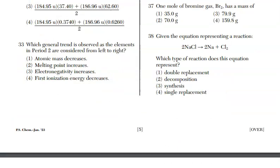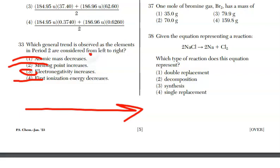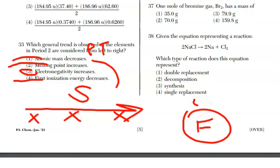Question 33, which general trend is observed as the elements in period 2 are considered from left to right? We're going across the periodic table. Does the atomic mass decrease? That is for sure a no. The electronegativity, does that increase? That is a yes. You could go to reference table S, and what you could do is you could spot three elements in period 2, which is row 2, and then look at the general trend. I know in period 2, we have fluorine at the very end, and fluorine has the highest electronegativity at 4.0. So that definitely means, as we're going towards fluorine, the electronegativity is increasing.